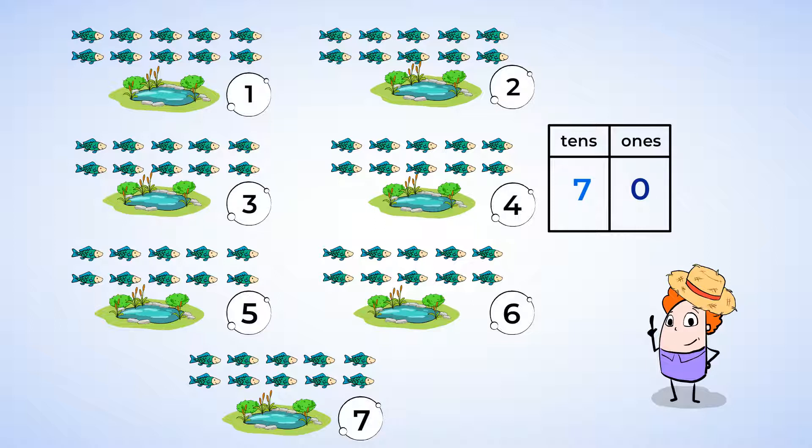That means we can make 7 groups of 10. Good work. And by the way, are there any fish that are not in groups of 10? No, there are exactly 7 groups of 10 with none left over. But we do have to remember to write 0. Our 0 the hero placeholder. Without 0 the hero, our number wouldn't say 70. It would only say 7. Now that we've got that under our belts, let's go back to planting beans.